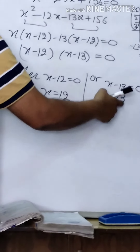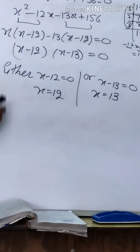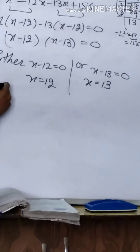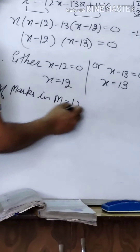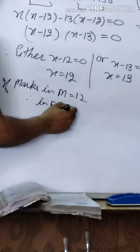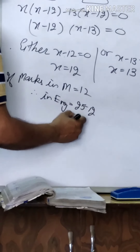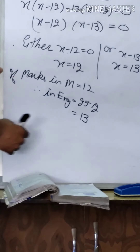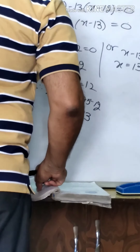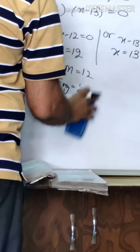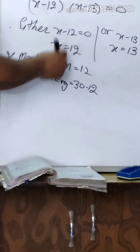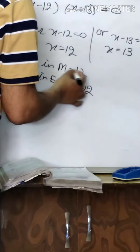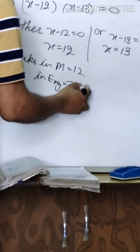Both 12 and 13 are positive. Since x represents marks in Mathematics: if marks in Mathematics = 12, then marks in English = 30 - 12 = 18, because the sum of marks is 30.